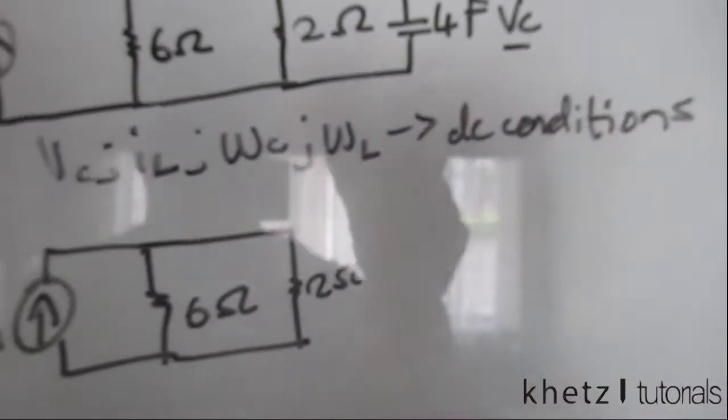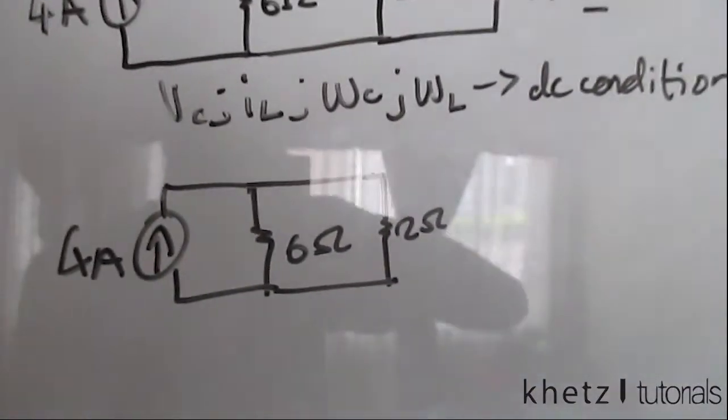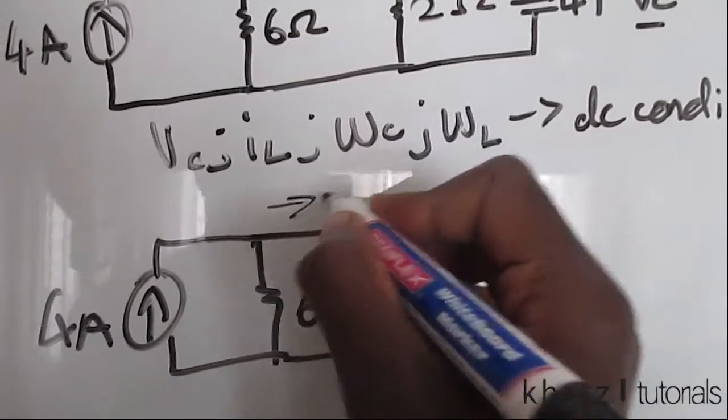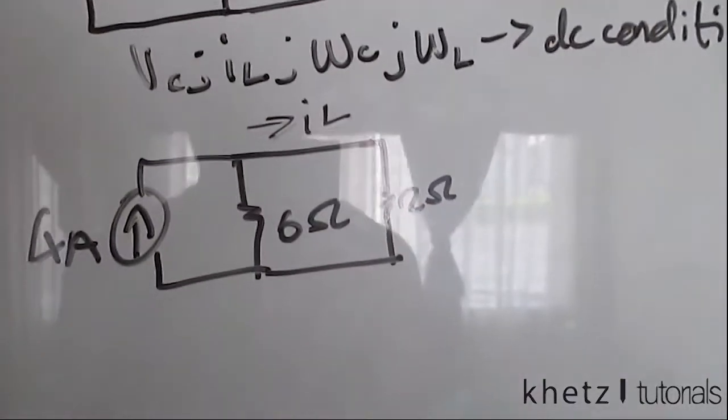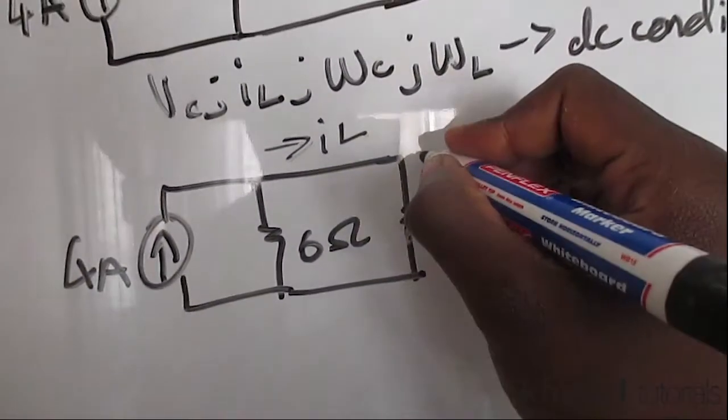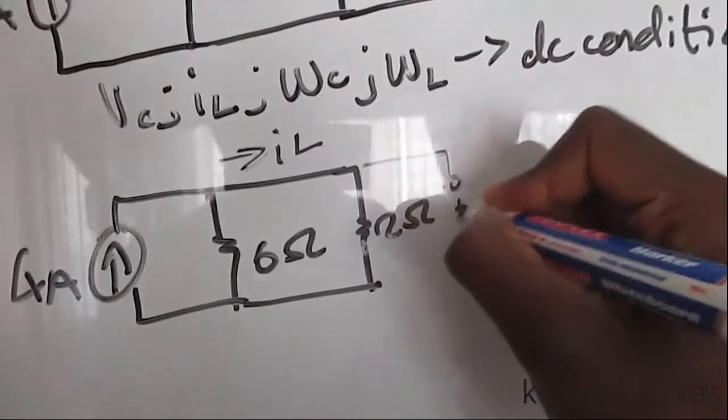After omitting all of that, we still have this IL across there. So we can first start by finding IL. And as you can see, if we had this VC over here, it would be in parallel with this 2-ohm resistor.